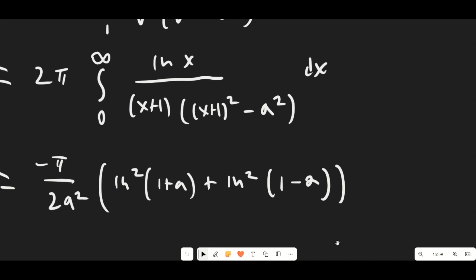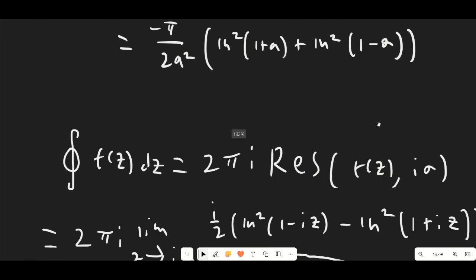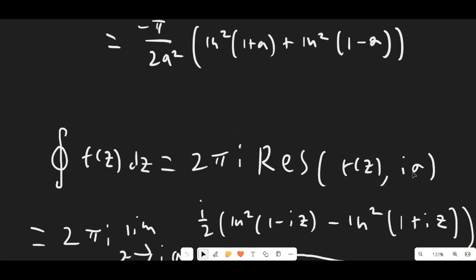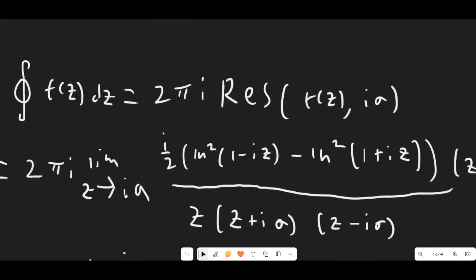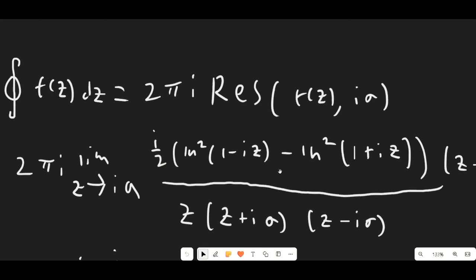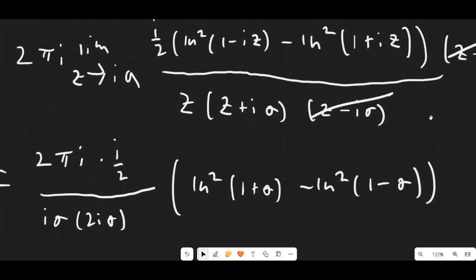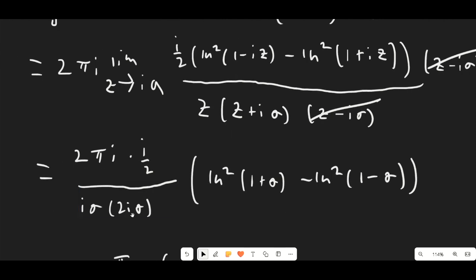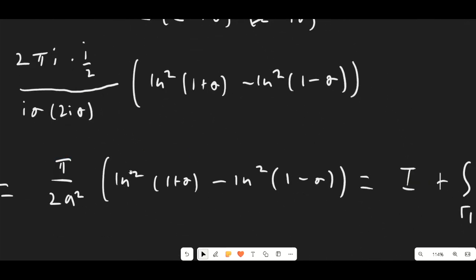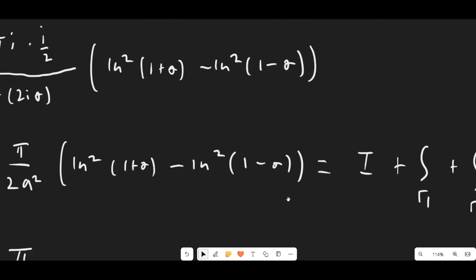Now let's evaluate the residue, which gives us the overall value of the contour integral. The contour integral equals 2πi times the residue of f(z) at ia, so we compute 2πi times the limit as z → ia of (i/2) · [ln²(1 − iz) − ln²(1 + iz)] · (z − ia) / [z · (z + ia) · (z − ia)]. We cancel the (z − ia) factor, plug in z = ia, and get 2πi · (i/2) / [ia · 2ia] times the log-squared expression. After simplification, the residue contribution is π/(2a²) · [ln²(1+a) − ln²(1−a)].